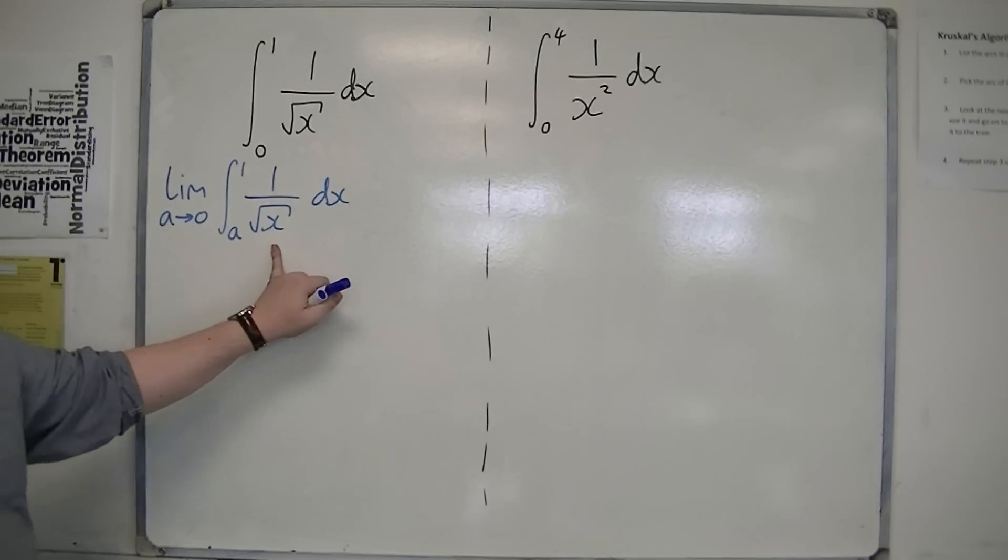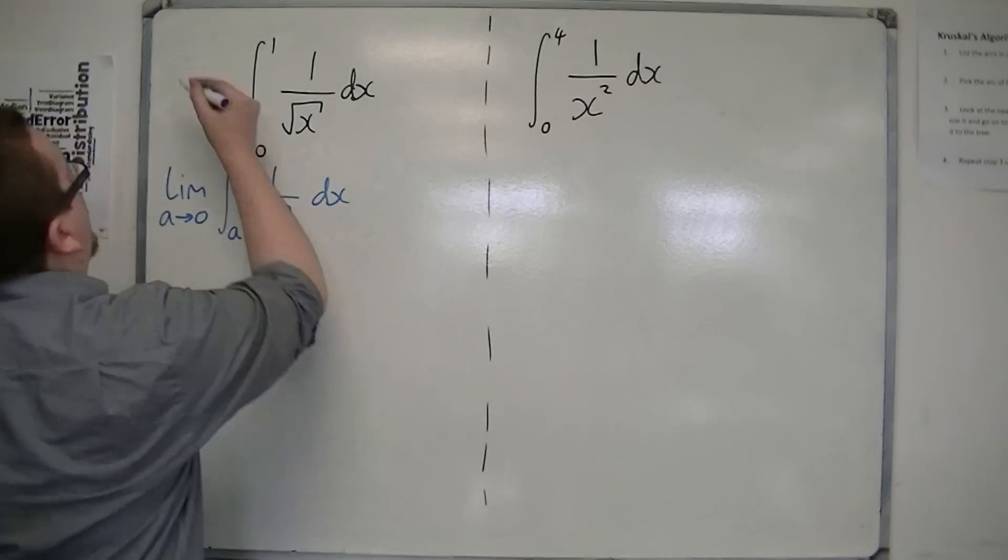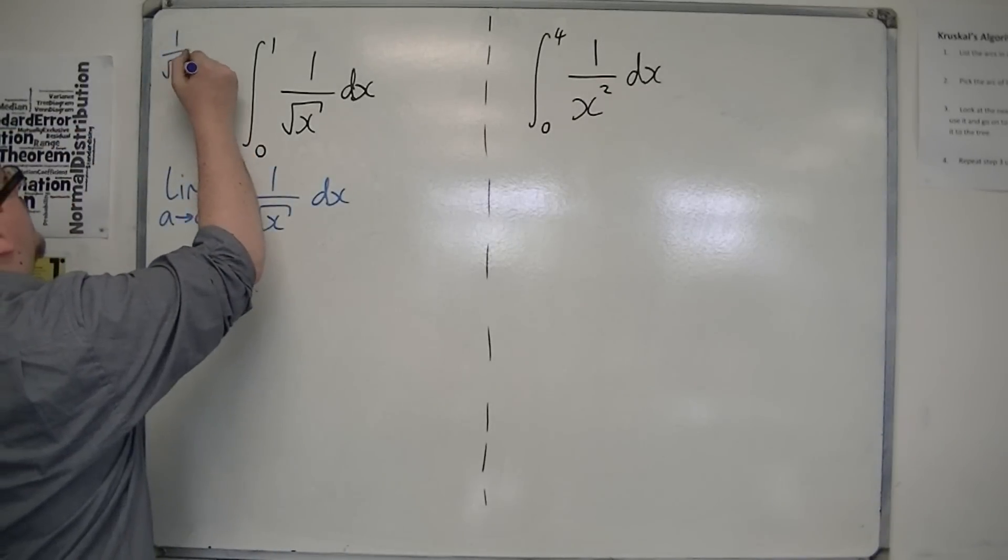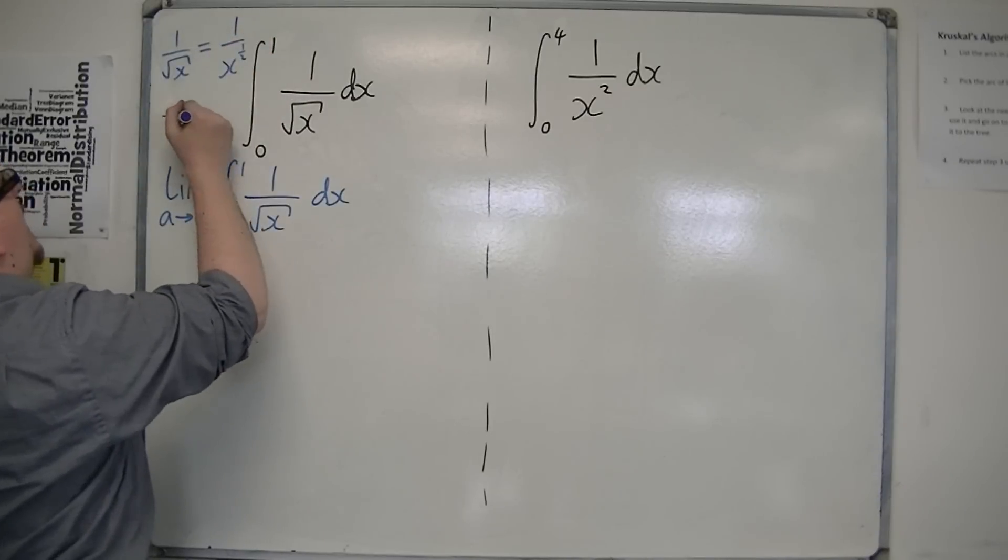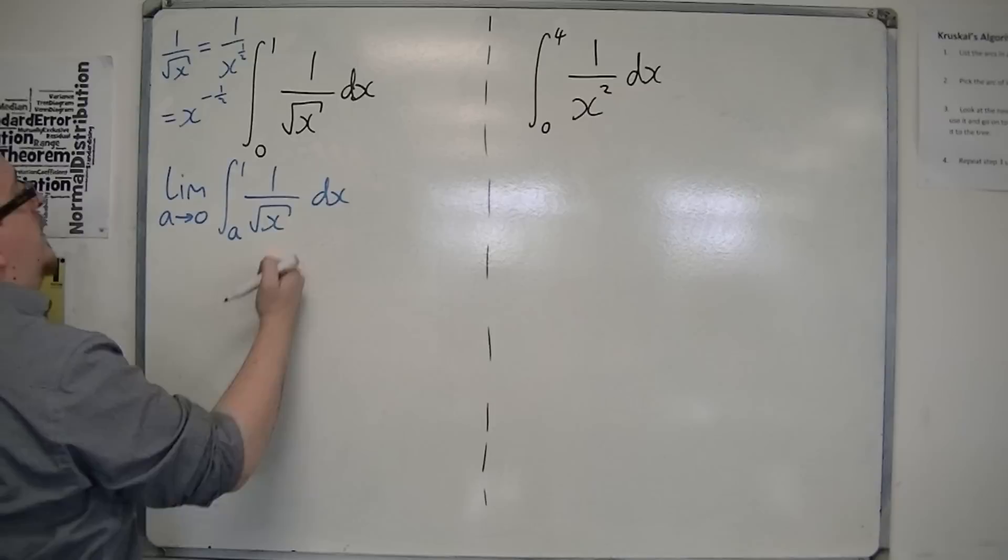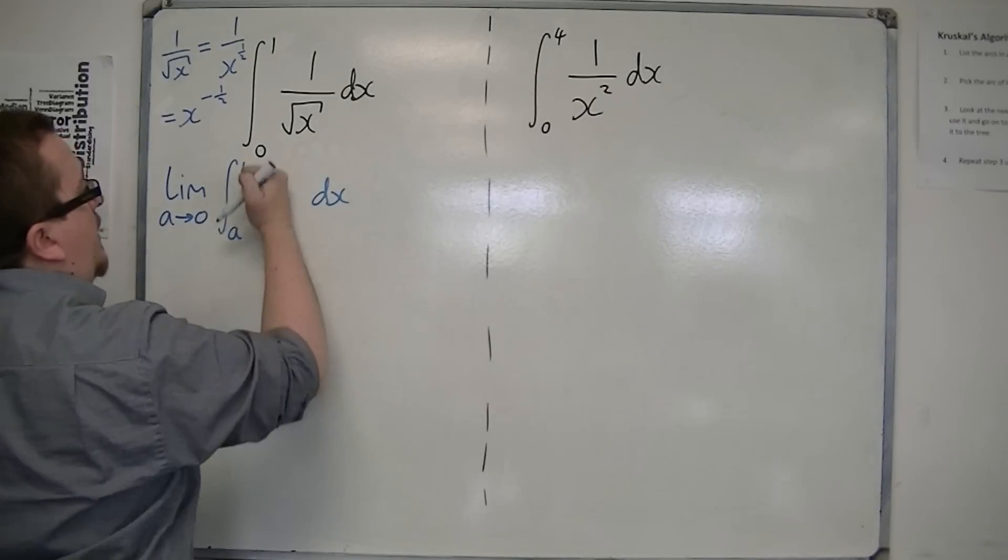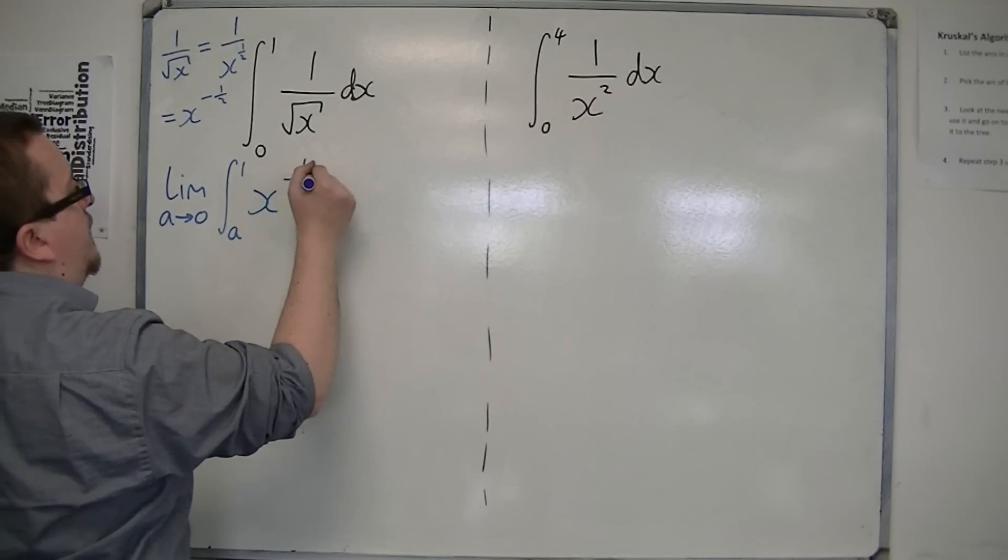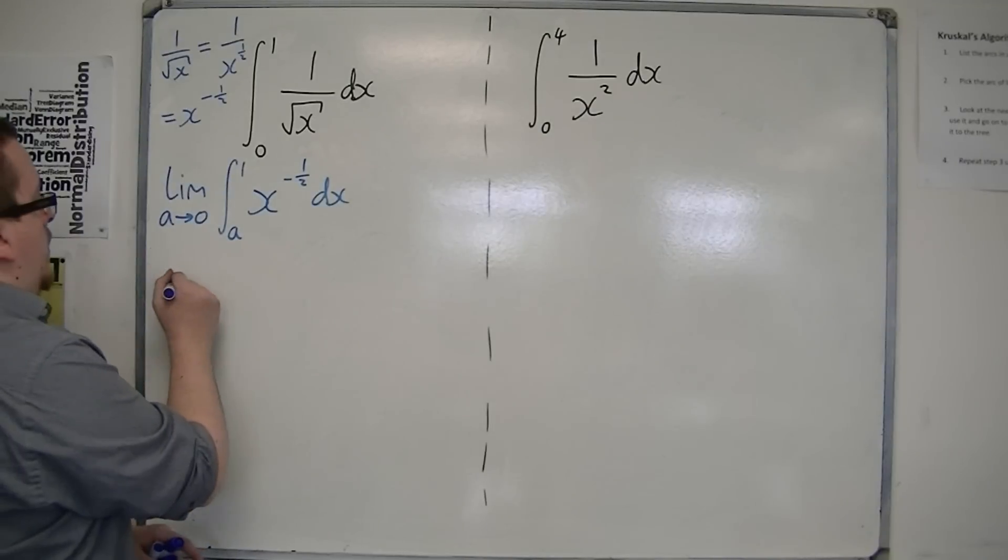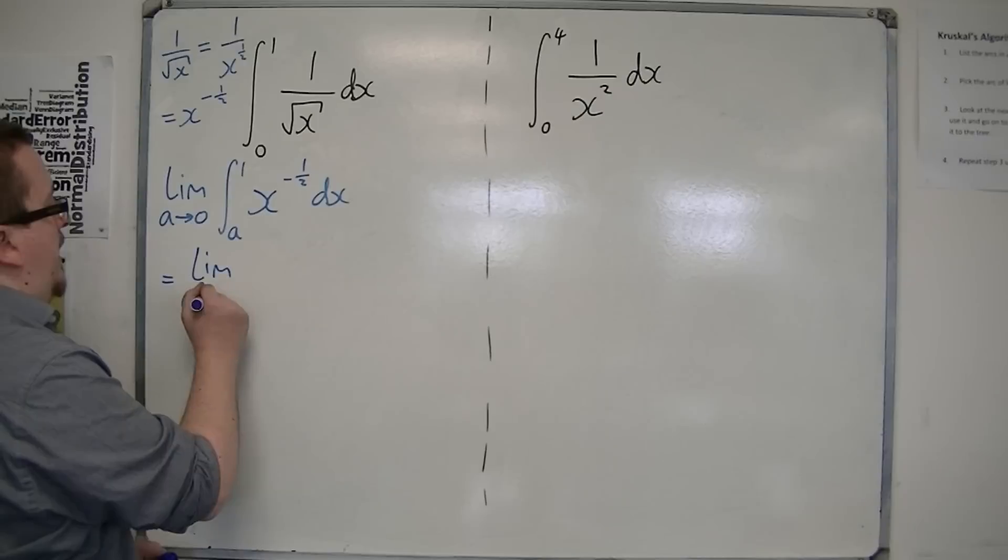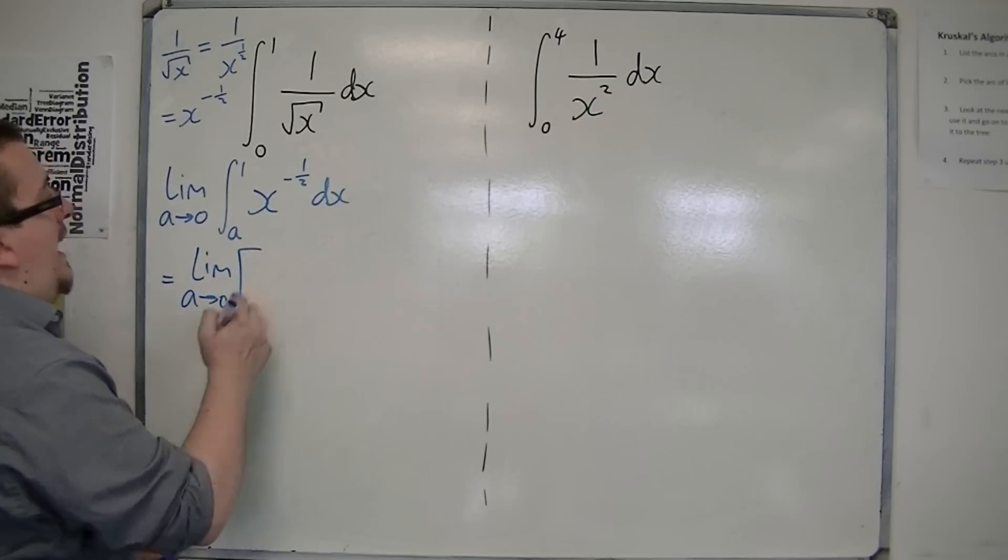Now I want to integrate 1 over root x. 1 over root x is 1 over x to the half. So that's x to the minus a half. So I can replace the 1 over root x with x to the minus a half. So this is the limit as a tends to 0. Add 1 to the power. I get x to the half.